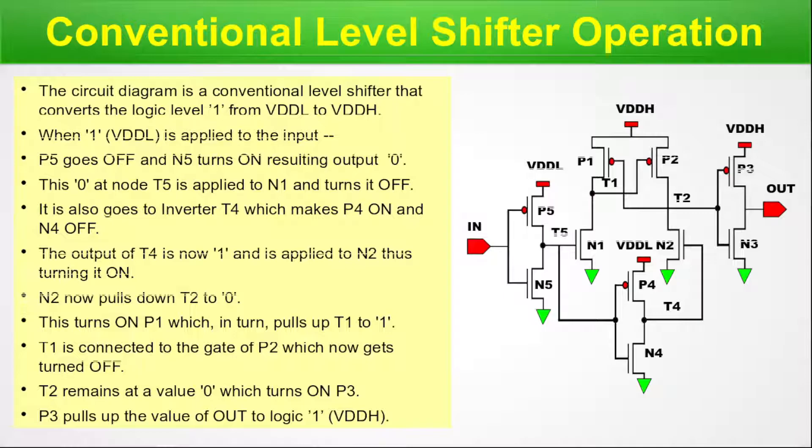P3 pulls up the value of out to logic 1, that is VDDH, at the output port. This is how the level shifting operation happens inside a basic level shifter cell.